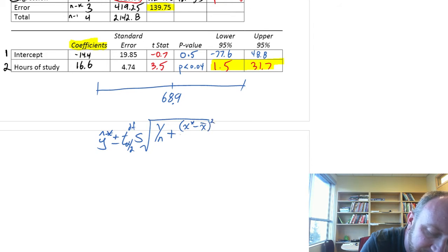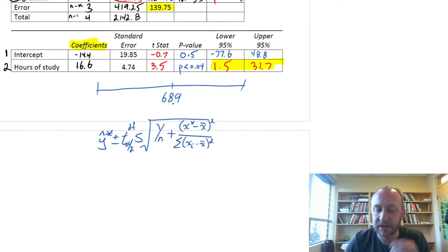minus x bar, squared, over the sum of xi minus x bar, squared.